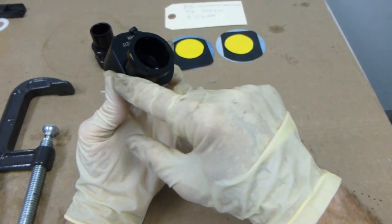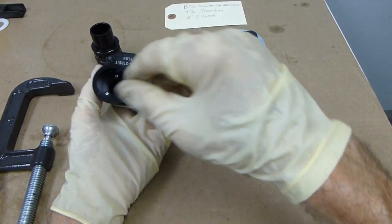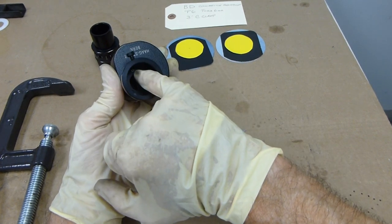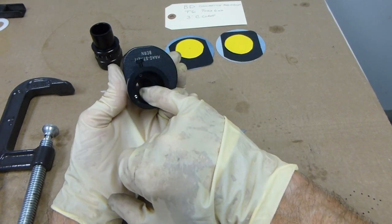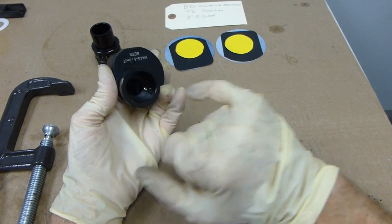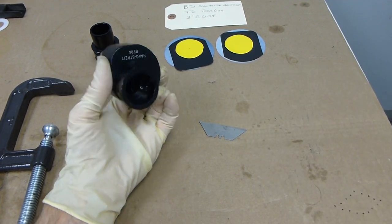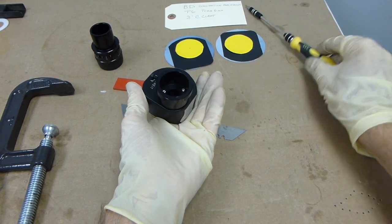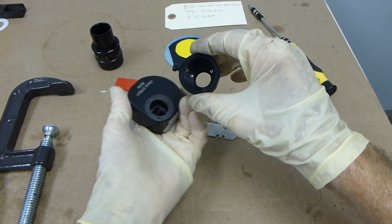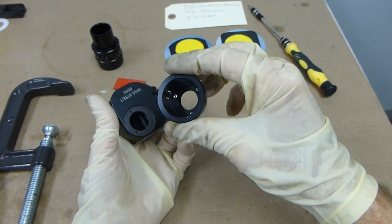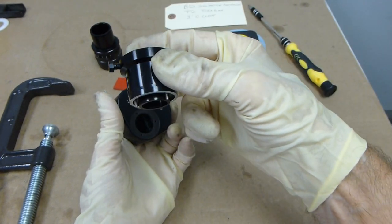And we're going to take this cap off. And on the newer BDs, these are Torx bits, Torx 6mm. I left the screws in there, but there they are.